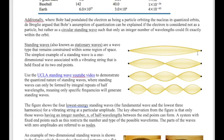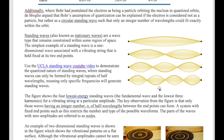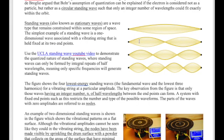If you want to see a standing wave, the easiest example is tying a rope on one end and moving the other end up and down — there's a UCLA YouTube video demonstrating this. The standing wave forms specific patterns. Start moving the rope up and down; the first pattern appears. Increase the frequency and you get a second pattern, then a third, and so on. The number of waves in a standing wave is always an integer number of half wavelengths — one, two, three half wavelengths, etc. The points of zero amplitude between wave peaks are called nodes.